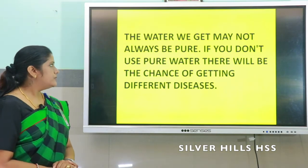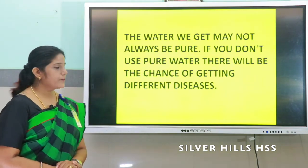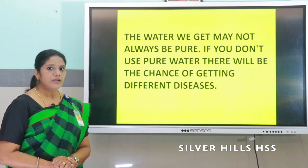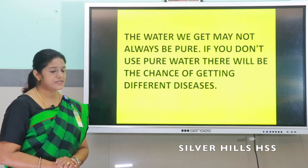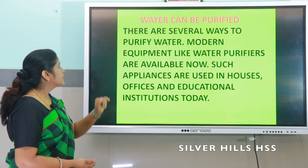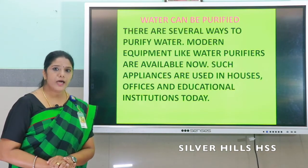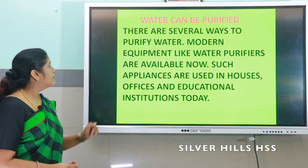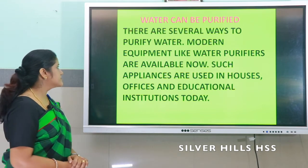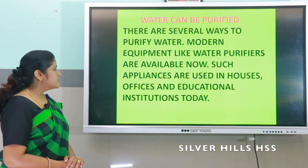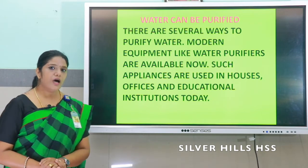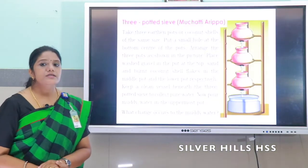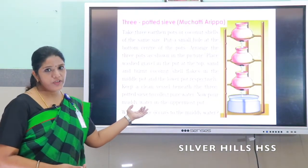The water we get may not be pure. If you don't use pure water, there will be a chance of causing different kinds of diseases. So well water can be purified. There are several ways to purify water. Modern equipment like water purifiers are available now. Such appliances are used in houses, offices, and educational institutions. This is a method of purification of water.